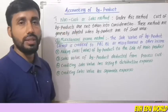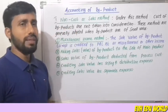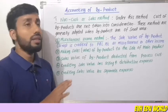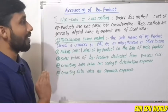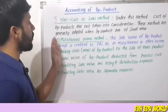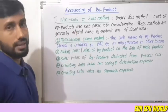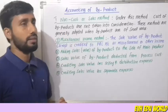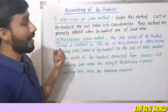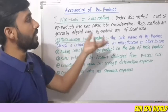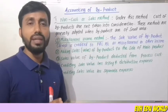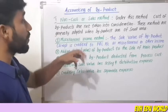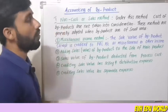One is the non-cost or sales method, and the other is the cost method. Under the non-cost or sales method, the cost of byproducts is not taken into consideration. This method is generally adopted when byproducts are of small value.